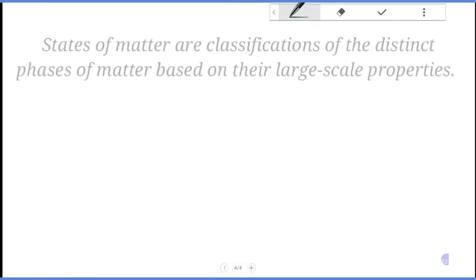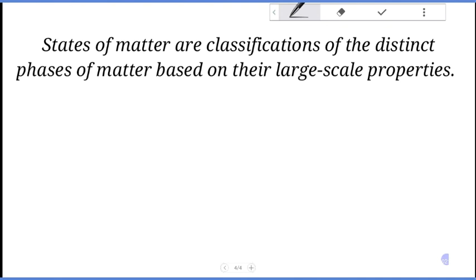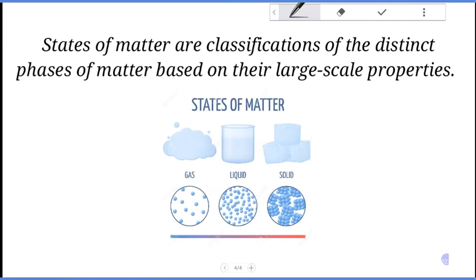The states of matter are the classification of the distinct phases of matter based on their large-scale properties. The solid phase is the state in which the substance maintains a fixed volume and a fixed shape.